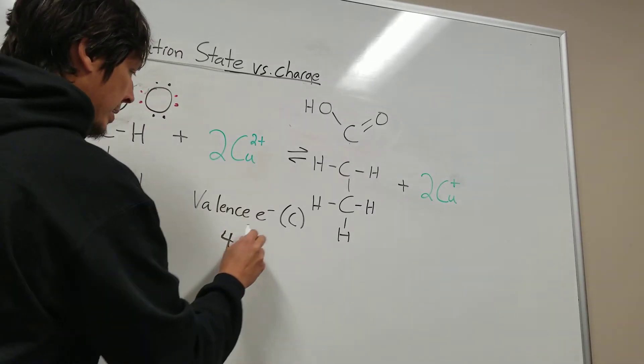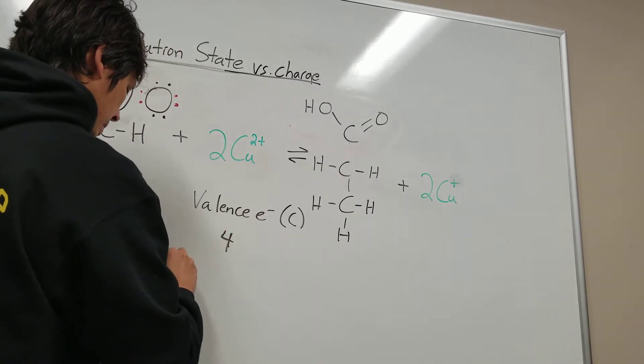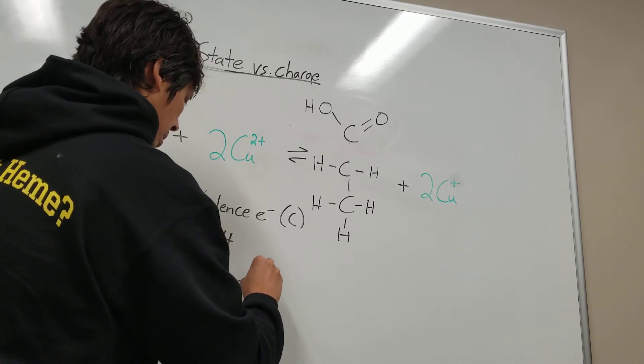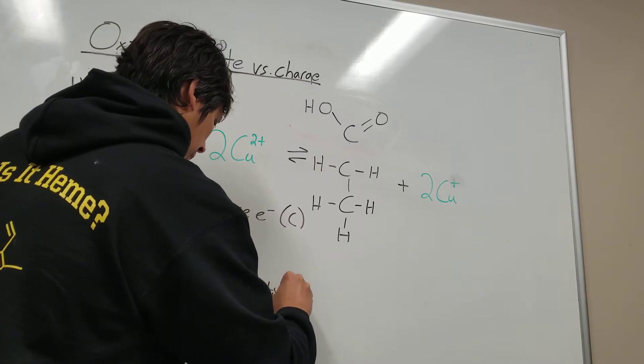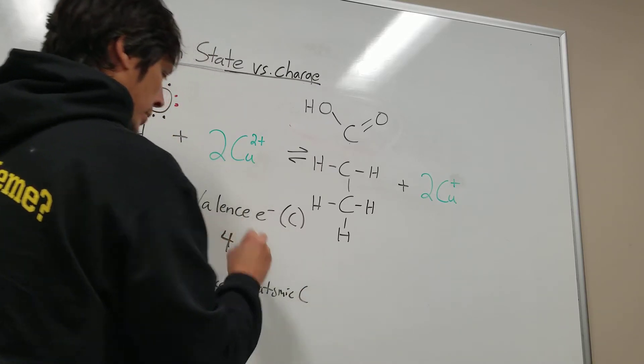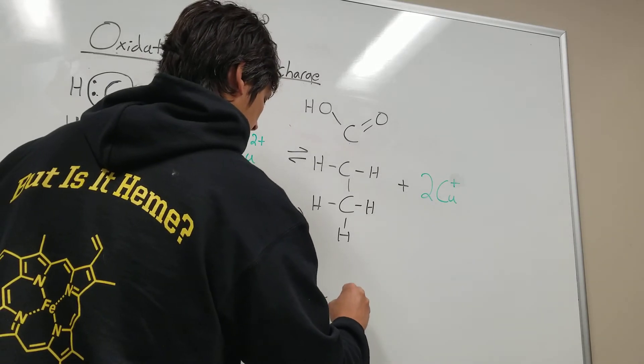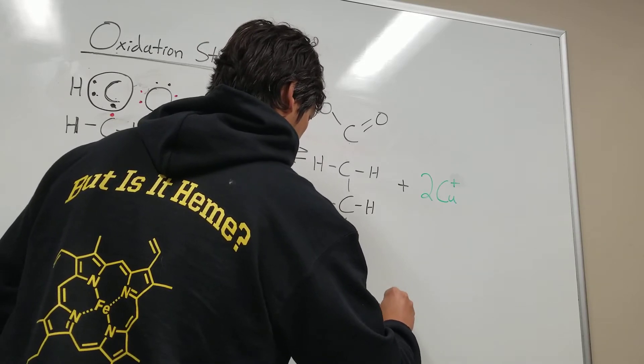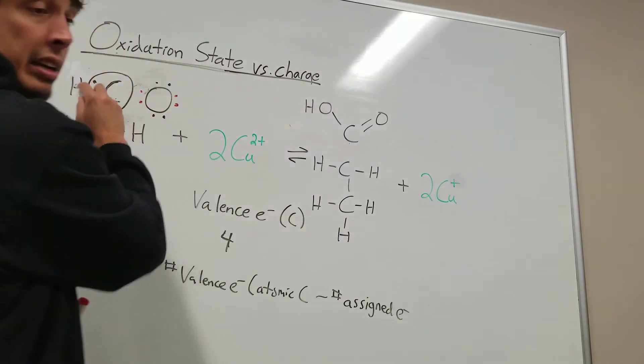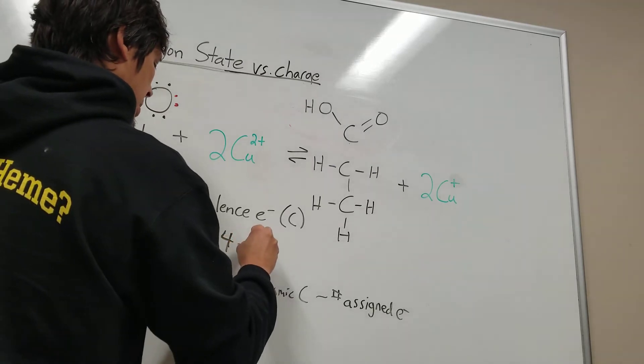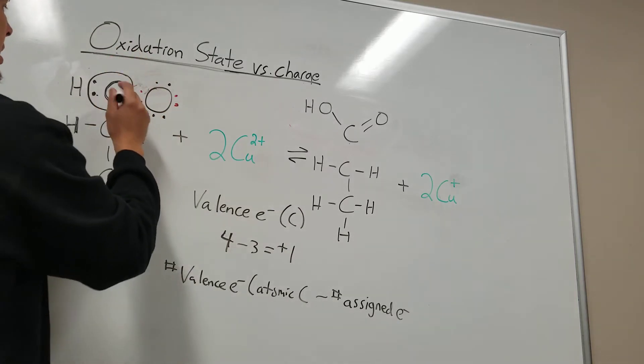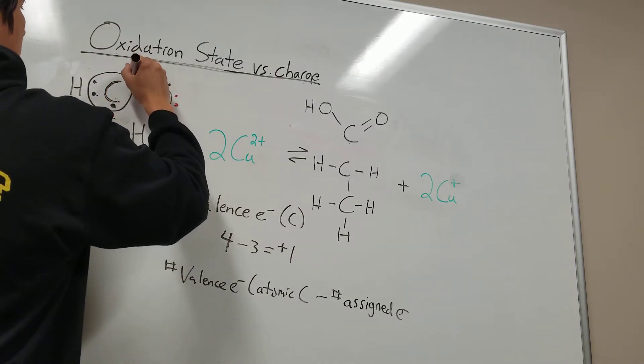So the oxidation state is going to be the number of valence electrons for atomic carbon, which is four, minus the number of assigned electrons that we assigned up here. So four minus three equals plus one. The oxidation state of this carbon is plus one.